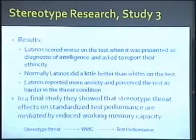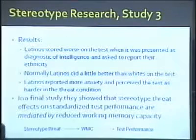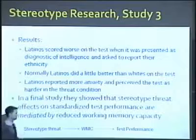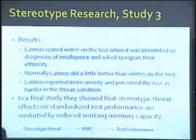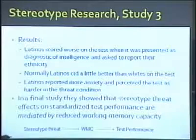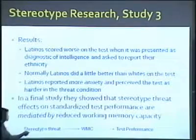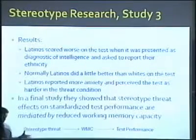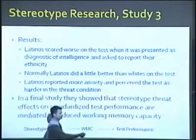In their final study, Schmader and Johns 2003 showed that the effect of stereotype threat — making salient some stigma and its negative effects on subsequent performance — is statistically mediated by reduced working memory capacity. Mediation means that working memory capacity is an intervening variable driving the effect. In other words, stereotype threat effects on test performance operate through working memory capacity: stereotype threat is salient, it's distracting, it reduces working memory capacity, and then reduced working memory capacity reduces performance on the test.